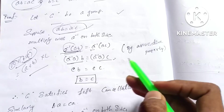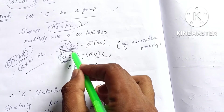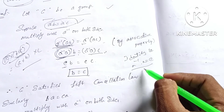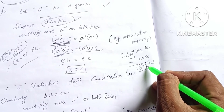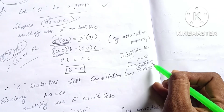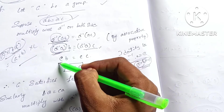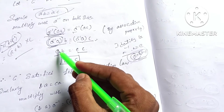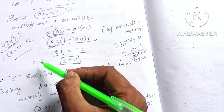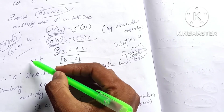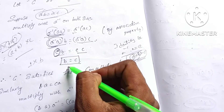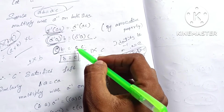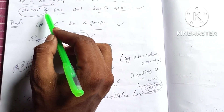So A inverse into A into B is equal to E. Since A inverse into A equals the identity element E, we get E into B is equal to E into C. So E into B equals B, and E into C equals C. Therefore B is equal to C. We have proved that AB equal to AC gives rise to B equal to C.